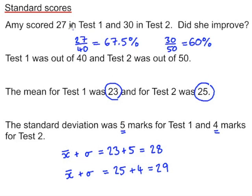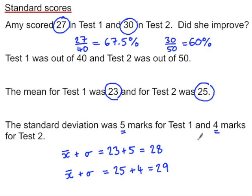Looking at raw scores, her mark was higher in test 2 than in test 1. But looking at percentages, her percentage was higher in test 1. Looking at class averages, Amy was above the mean for both tests. However, her score in test 2 was more than one standard deviation above the class mean, while her score in test 1 was less than one standard deviation above the mean — meaning her test 2 result was comparatively better.